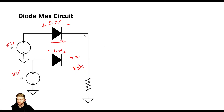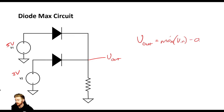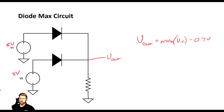So what we can see is that this circuit is actually finding the maximum of these two signals. If we call this V_out, we can say V_out equals the maximum of all the inputs minus that 0.7 volt diode drop. I encourage you to put this in LTSpice and simulate it so you can see for yourself — this circuit helps us find the maximum of a set of signals.